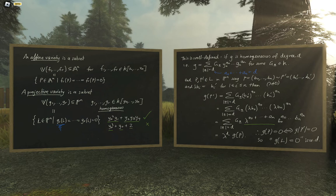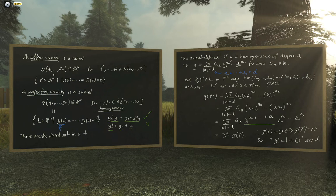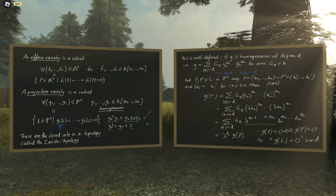So given homogeneous polynomials G1 through Gr, the vanishing locus V(G1, ..., Gr) cuts out a well-defined subset of PN. These are the closed sets in a topology called the Zariski topology. That's kind of a passing comment, but it'll probably come up when I answer questions. Any questions at this point?